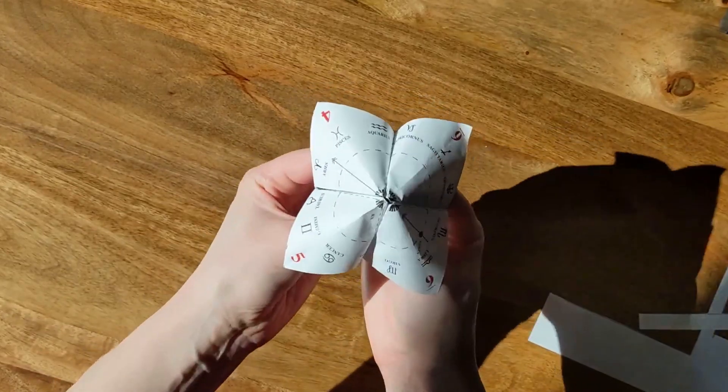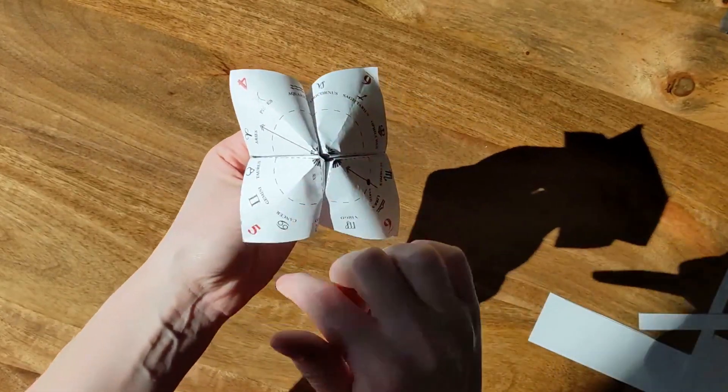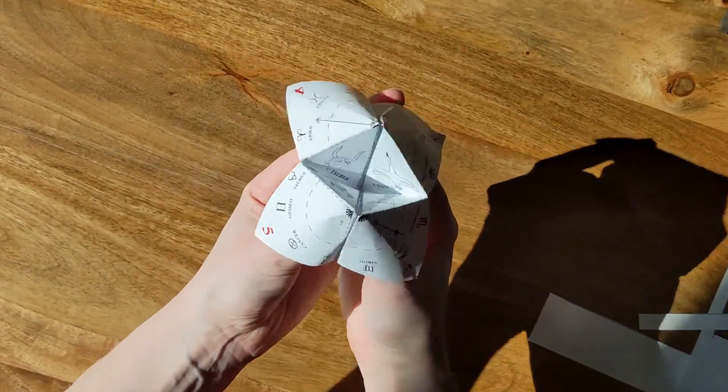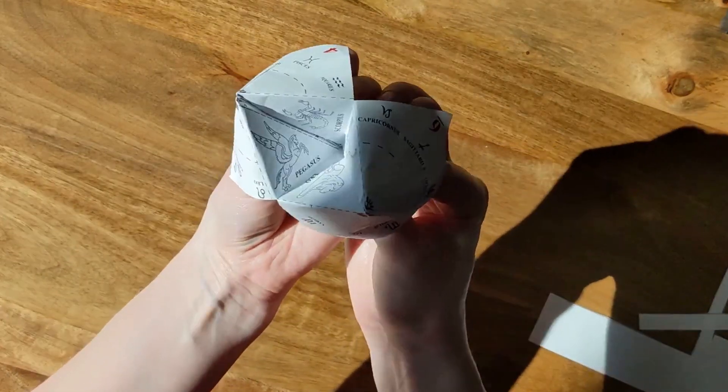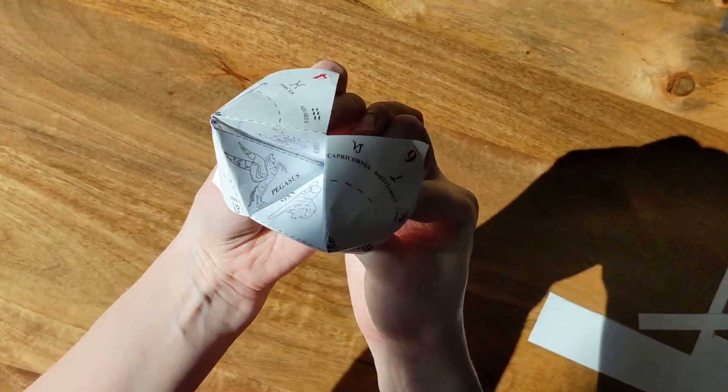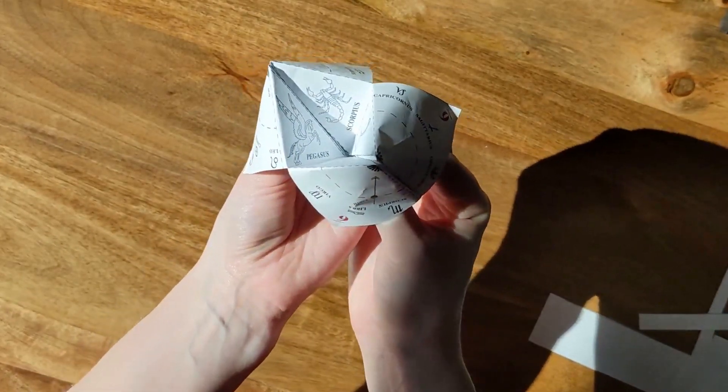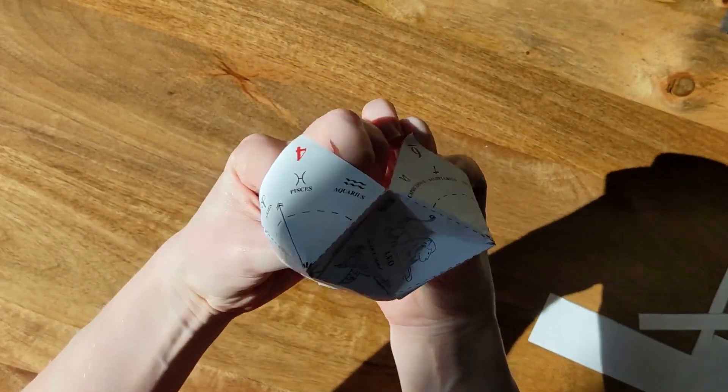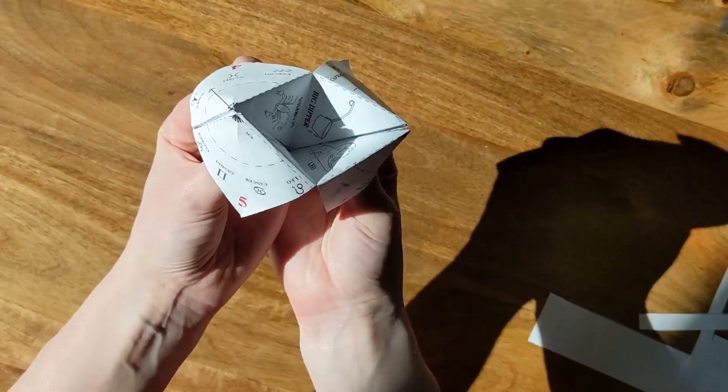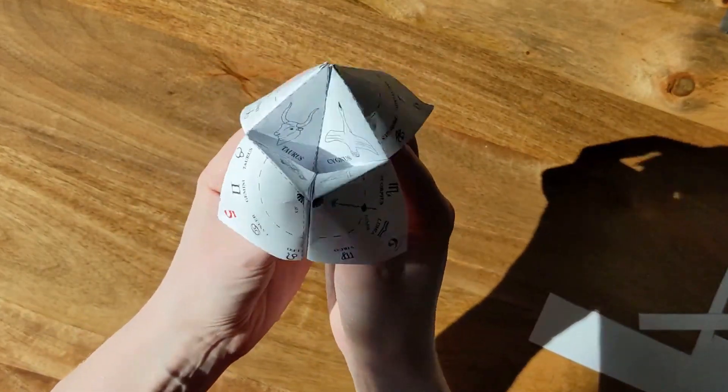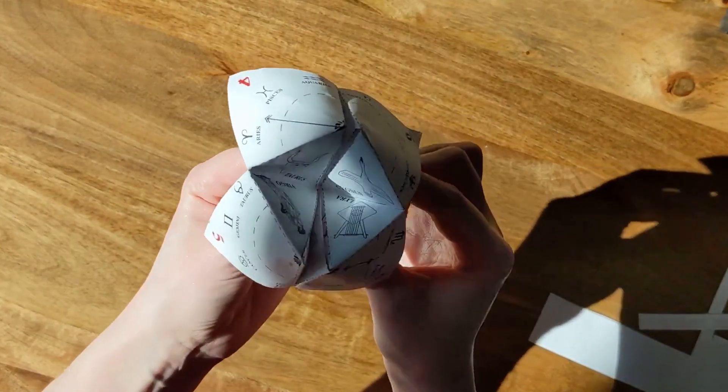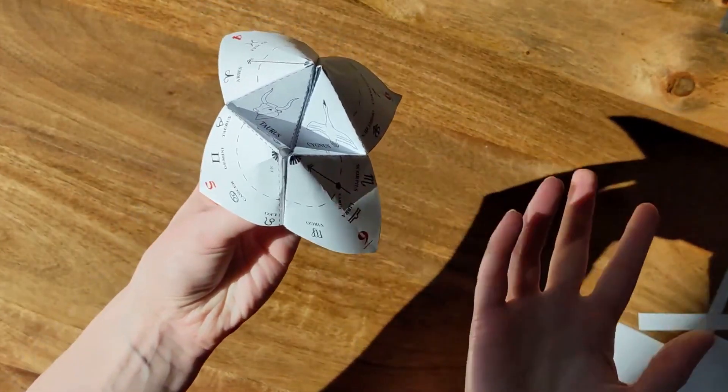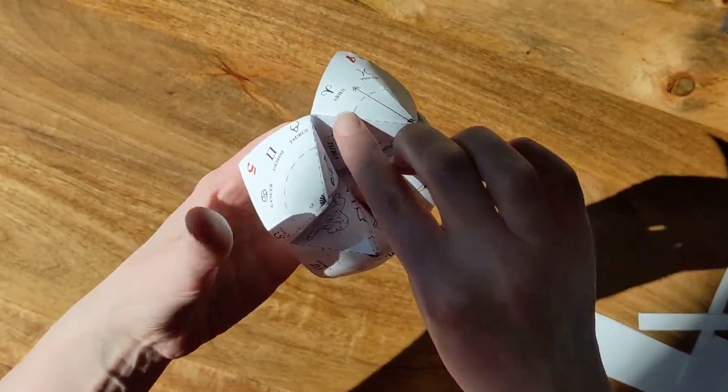So what you're going to do is you're going to play this with somebody else and ask them to pick a number. Let's say four. One, two, three, four. And I'm not sure if you can see in there very well. Then you would pick one of the constellations and you'd spell it out. So I'm going to do Leo. L-E-O. And then you're going to pick a constellation and unfold it. So because I did the Taurus constellation for my scope, I'm going to unfold Taurus.